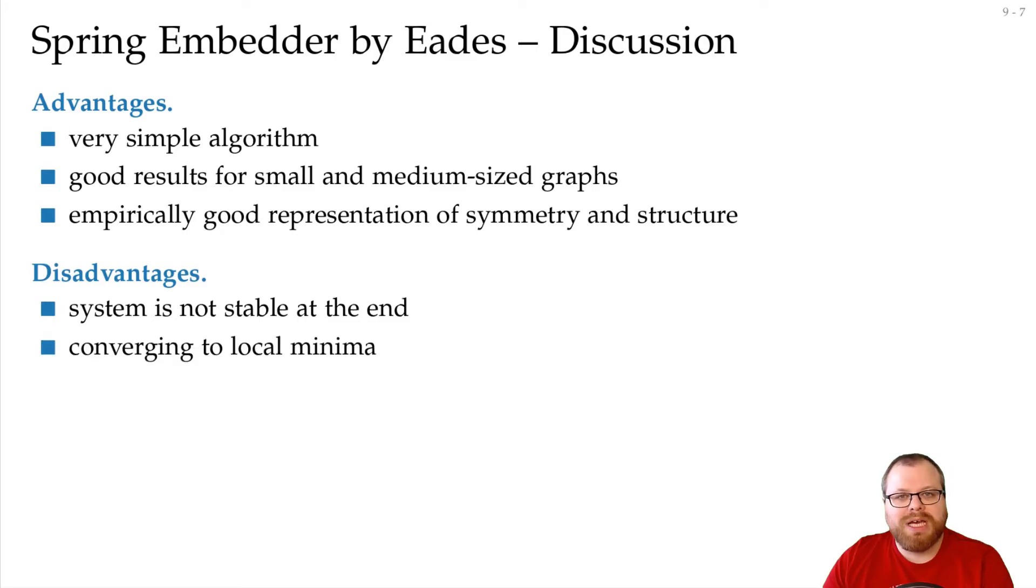Also, we have conversions to local minima. As you saw, when I put the L large but the constant small, at some point it just stopped, and this was a local minimum, but it was not a good solution. We want to have a global minimum, that means that we have to push over some hills. We might have to go to something worse first before we can get the best solution. And that's something that often doesn't happen here.